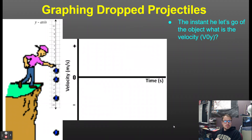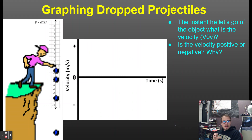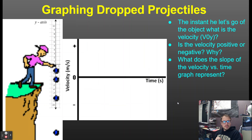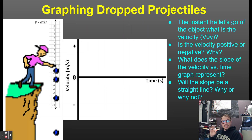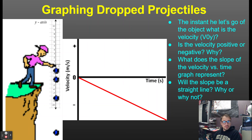On the velocity-time graph, the initial velocity is zero and the velocity becomes increasingly negative since the object falls downward the entire time — the entire graph is on the negative side. The slope of the velocity-time graph is the acceleration: change in velocity divided by change in time. Because it's a constant acceleration, the slope is a straight line — it is a linear graph.